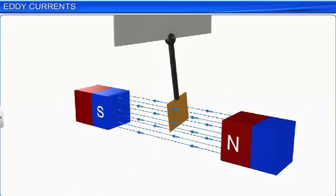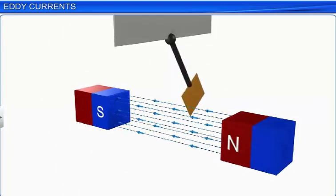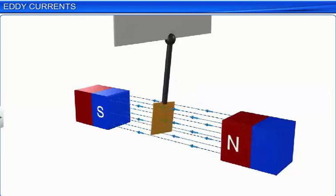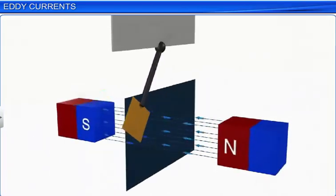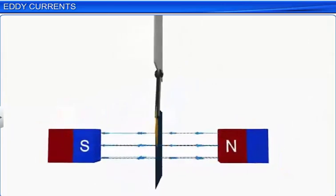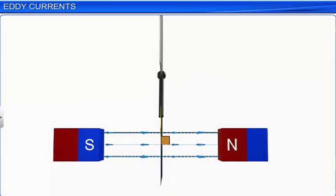We use an apparatus that allows a copper plate to swing back and forth through a magnetic field, like a pendulum. The plane in which the copper plate swings is parallel to the plane of the plate and normal to the direction of the magnetic field.